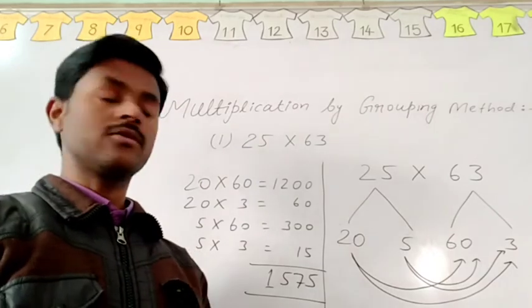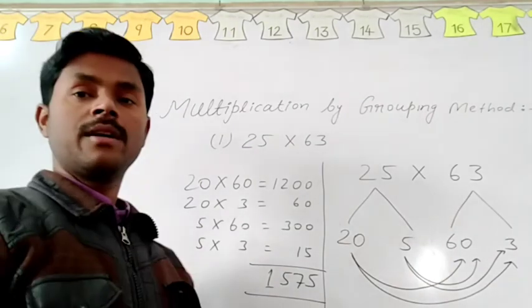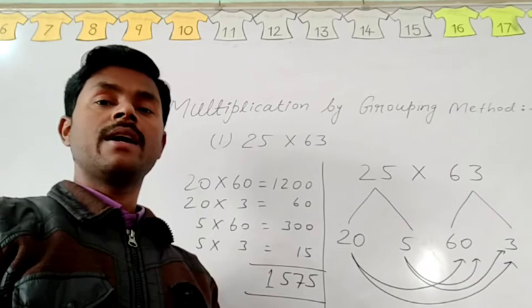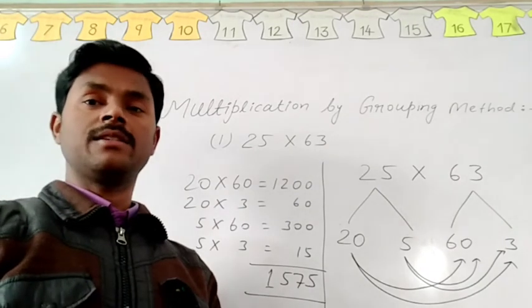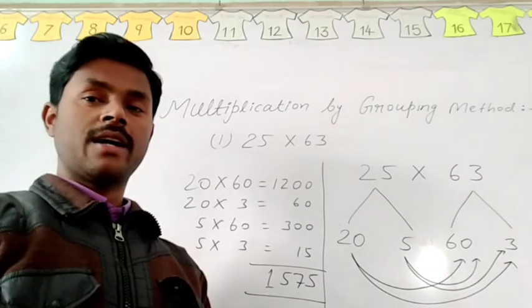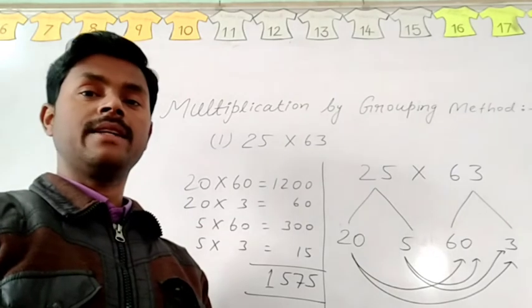We have also found 1575 for the product of 25 and 63 in simple method. So both answers are correct in grouping method and in simple method.